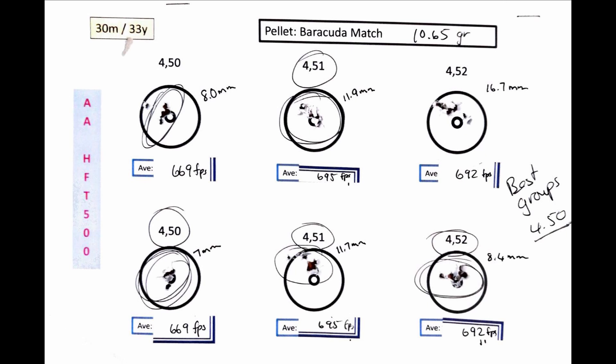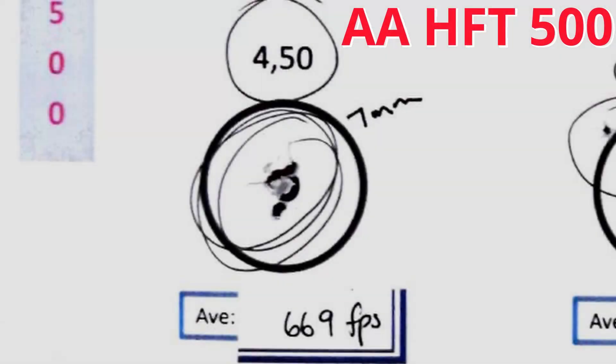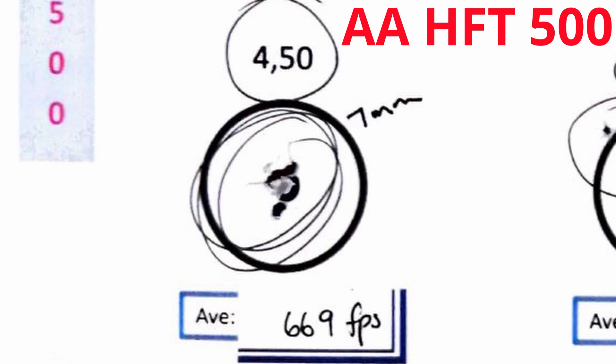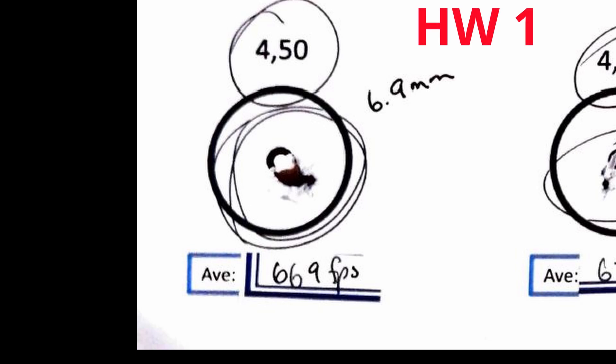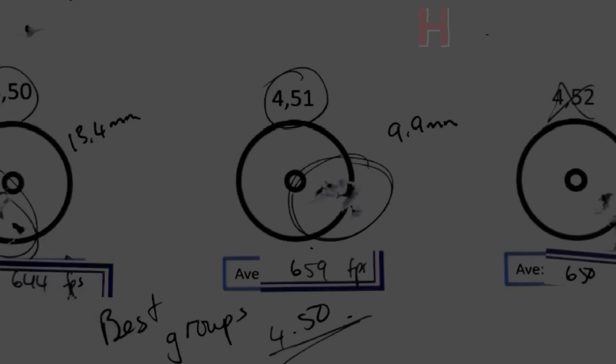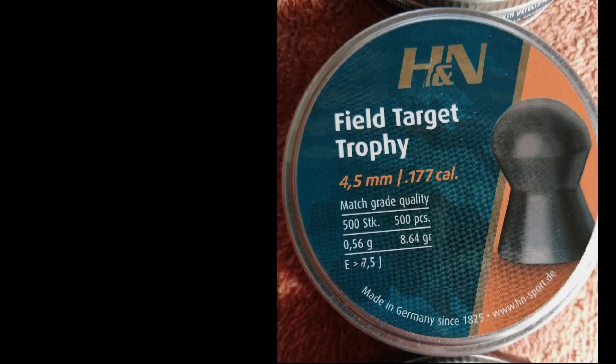Let's quickly look at the final results. The Air Arms HFT 500 loved the 4.50s with the best grouping there of 7 millimeters. Going over to the HW1, it also liked the 4.50s with the best grouping of 6.9 millimeters. And then finally the HW2, the weird one, the odd one, had a brilliant grouping with the 4.51s at 9.9 millimeter, but overall still preferred the 4.50s. Well, there we have it. In the Barracuda match, the 4.50s reigned supreme in all three guns.